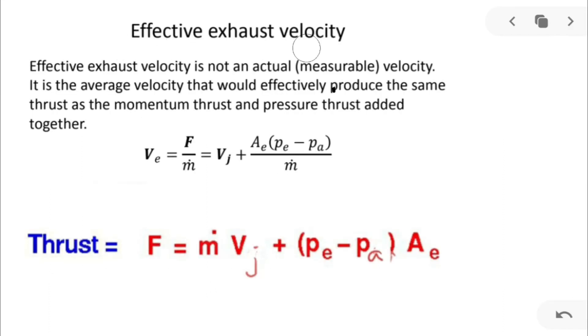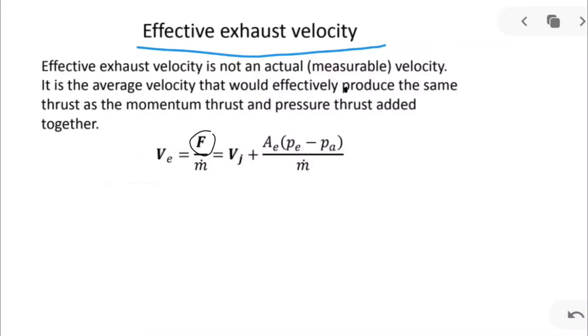Effective exhaust velocity. Effective exhaust velocity is not an actual velocity. It is the average velocity that would produce the same thrust as the momentum thrust and pressure thrust added together. Force is equal to m dot into Ve.